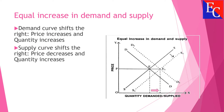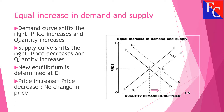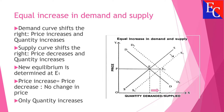Due to increase in supply, the supply curve shifts to the right, price decreases and quantity increases. The new equilibrium is at E1. In this case, the increase in price is equal to the decrease in price, so there is no change in price — only quantity increases.